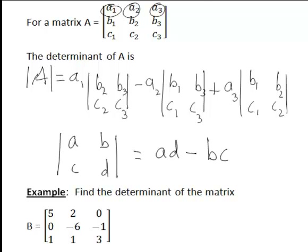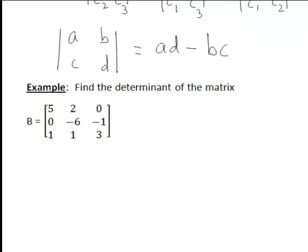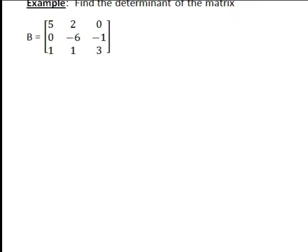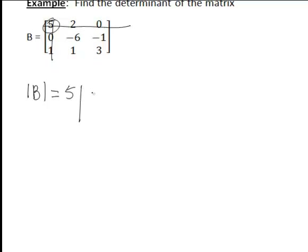Let's apply this to the following example, finding the determinant of this matrix. We start by looking at the element in the first row and the first column, which is 5. Imagine covering up that row and column — that leaves us with the determinant of the matrix negative 6, negative 1, 1, 3.